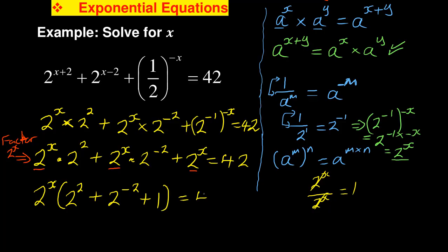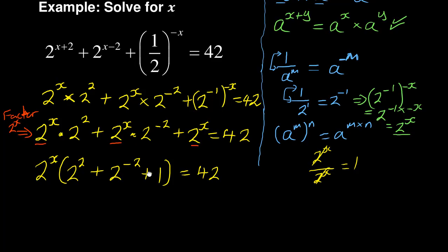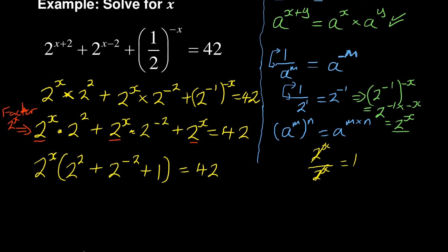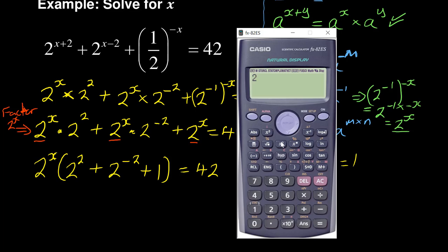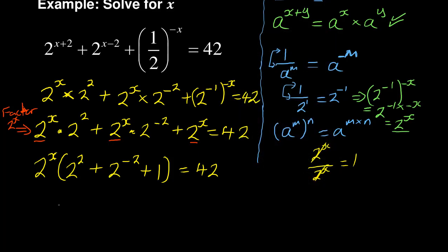This equals 42. Now use your calculator to add everything inside the bracket: 2 to the exponent 2, plus 2 to the exponent negative 2, plus 1. Adding those values gives you 21 over 4. So you now have: 2 to the exponent x, times 21 over 4, equals 42.